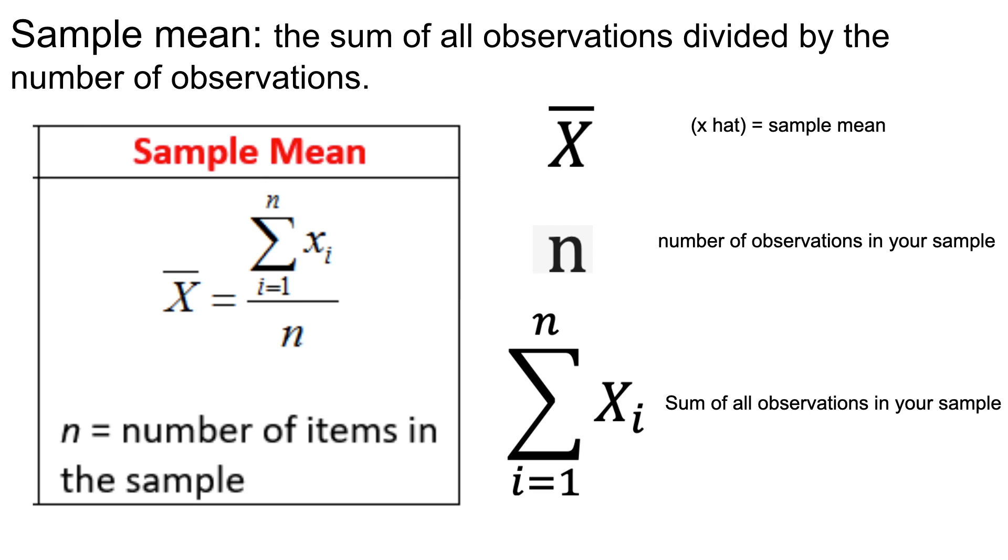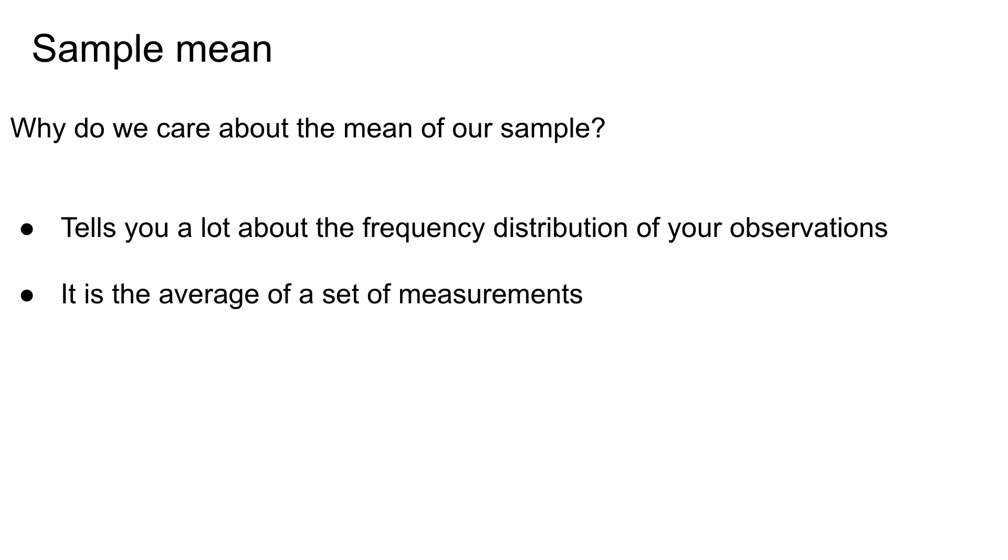So to calculate the sample mean it's pretty straightforward. Essentially what we're doing is we are taking the sum of all observations in your data set and dividing that sum by the total number of observations. So x hat or y hat sometimes designates our sample mean. N is the number of observations in your sample data set, and the summation is the sum of all observations in your data.